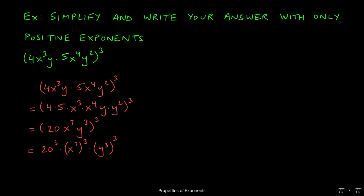This allows us to rewrite the problem as 20 to the 3rd power times x to the 7th raised to the 3rd power, and then y cubed raised to the 3rd power, as you see here. Now, 20 to the 3rd is 8,000. We can use a machine to figure this out.